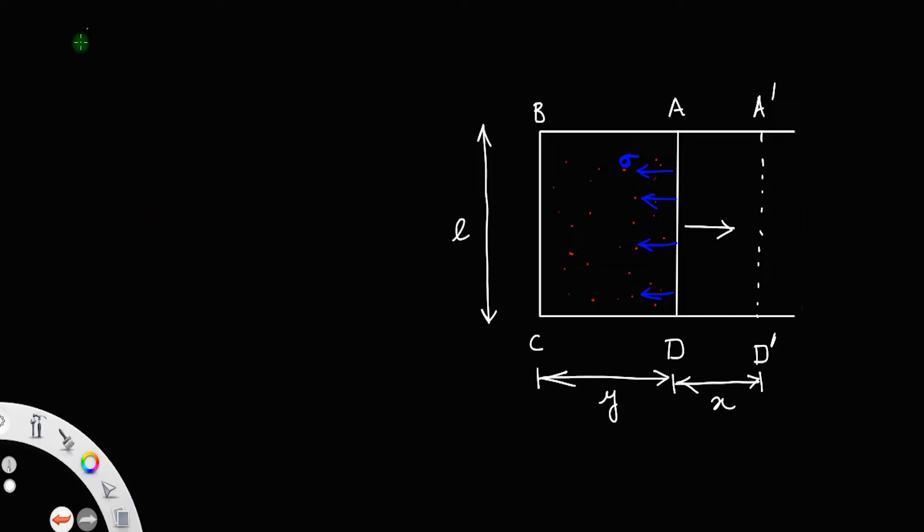Let us call that as sigma. From the definition of surface tension, we have it is force per unit length. Therefore, the force acting F is equal to sigma L, surface tension times the length.